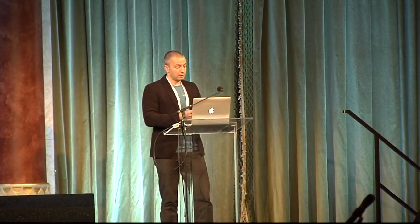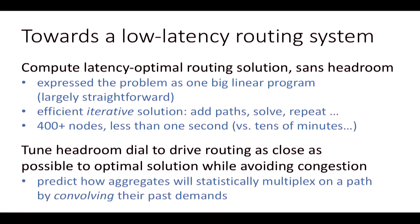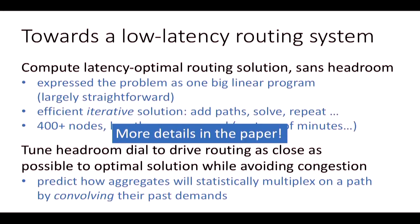We need to allow the minimum amount of headroom to cope with variability, because too much headroom hurts propagation delay. To compute the latency optimal routing solution, we express the problem as one big linear program and came up with an efficient iterative solution that lets us compute this at scale. Once we have that, we tune the headroom dial to drive routing as close as possible to the optimal solution without causing congestion. To do that, we predict how aggregates will statistically multiplex on a path by convolving their past demands.